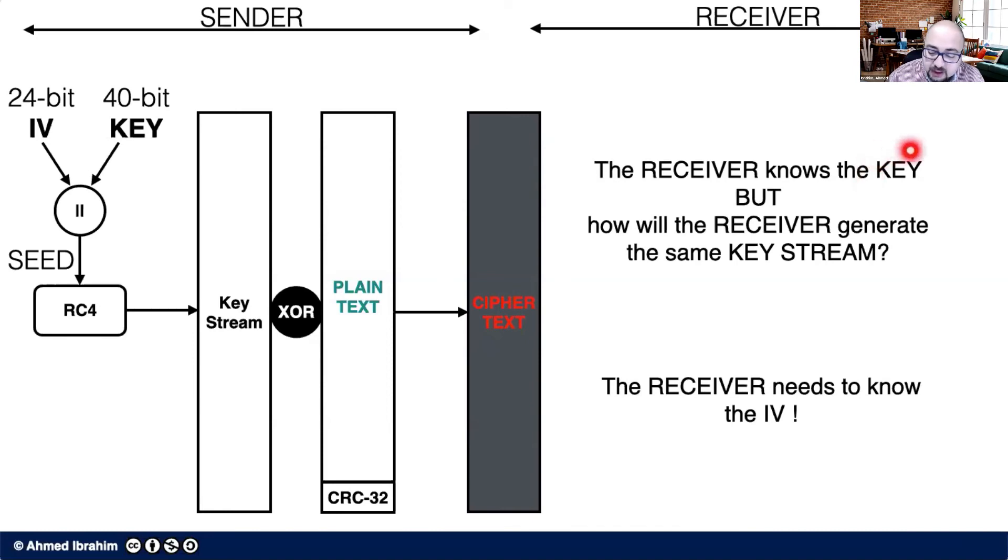but in fact they only know the key part of the seed. How will the receiver generate the key stream if they only know the key? They also need to know the initialization vector. I hope that's clear because this is about to make a problem.